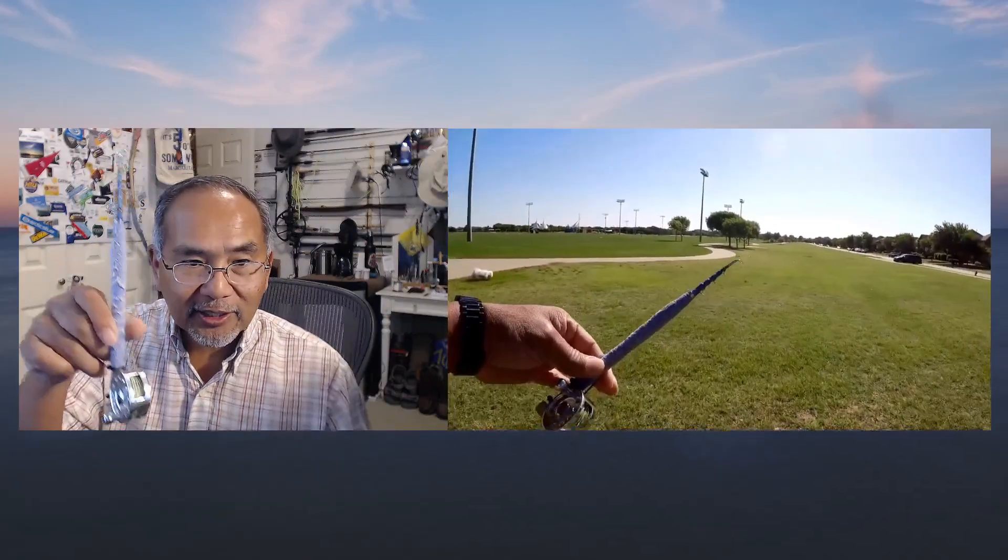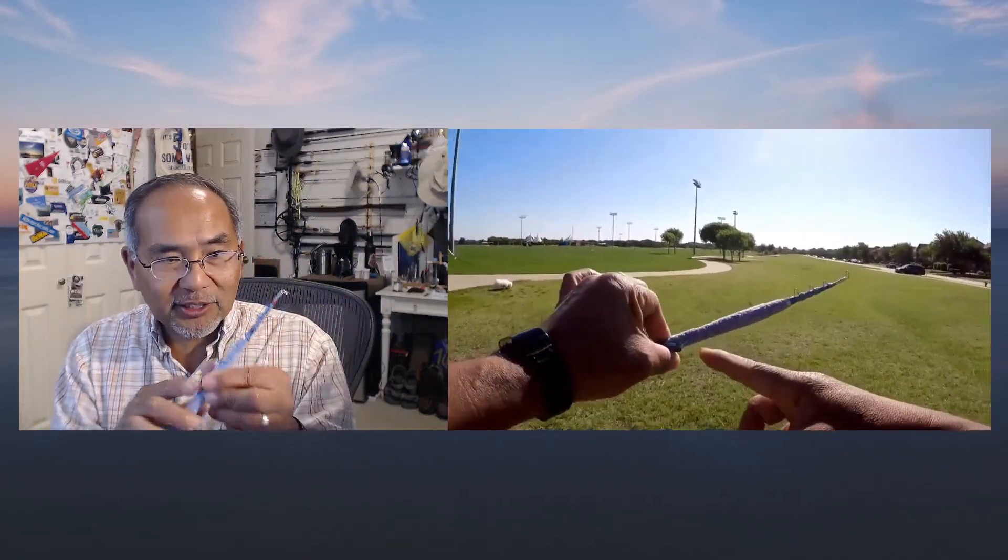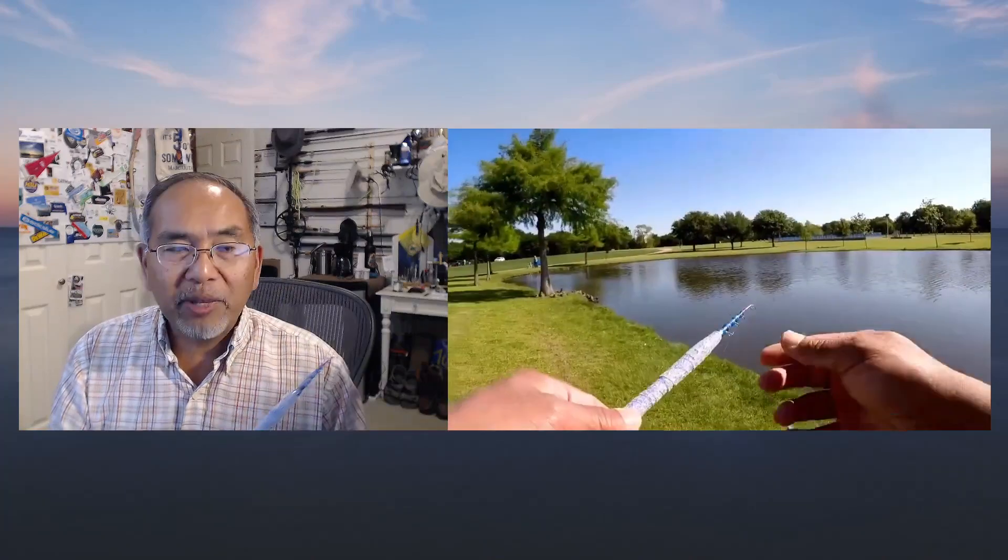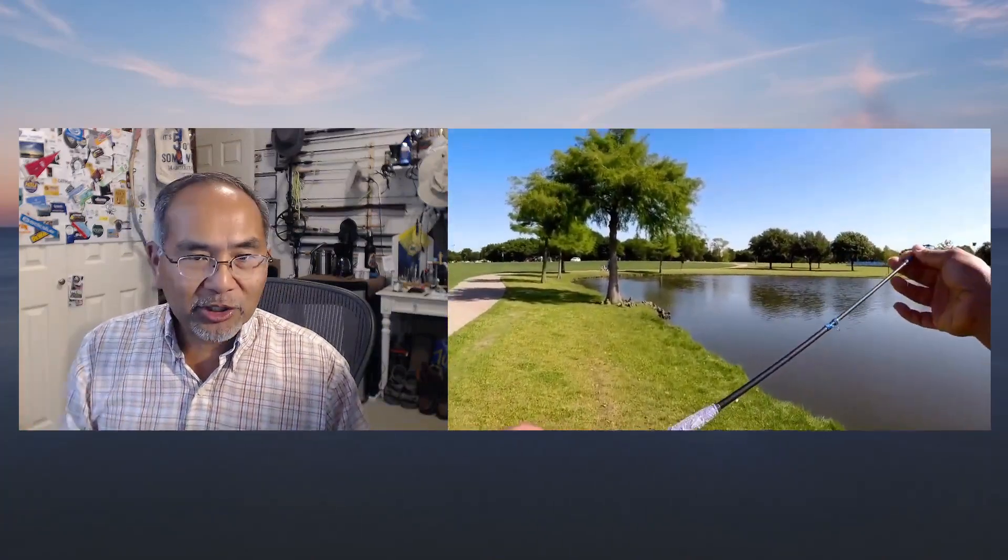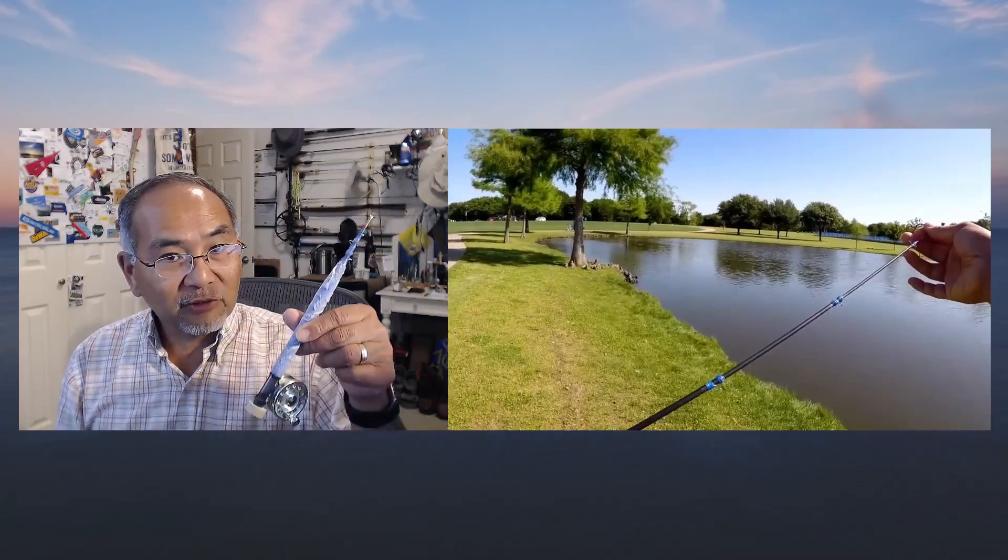This is a micro fly rod. It's telescoping, and I made it using a pen fishing rod. You can get them on Amazon, no problem. You just got to do a little conversion.